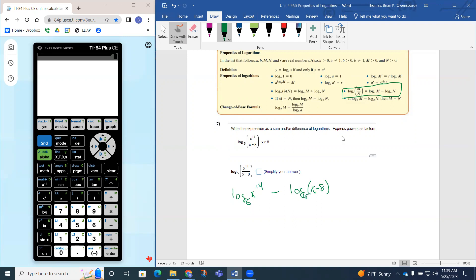What I can also do is, they said express powers as factors. This power can be brought out in front as a coefficient or a factor, if you will, since it's connected by multiplication, it's called factors. So that would be 14 times the log of x base 5 minus the log of x minus 8 base 5.